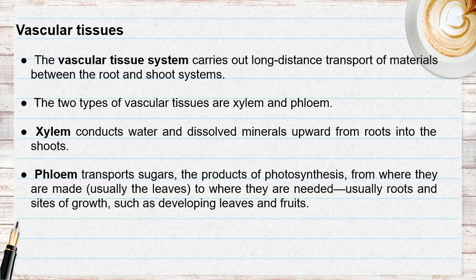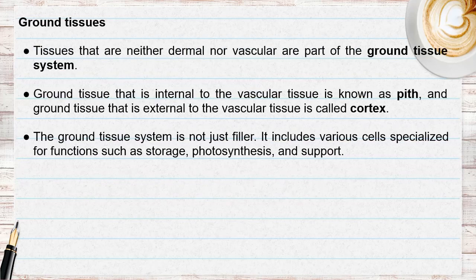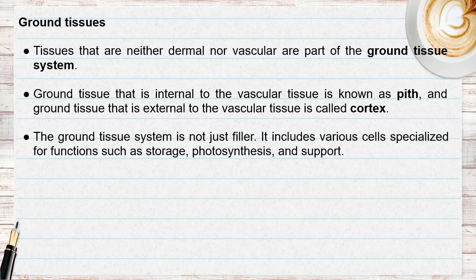The vascular tissue system carries out long-distance transport of materials between the root and the shoot. There are two types: xylem and phloem. Xylem conducts water and dissolved minerals from the roots up into the shoots, and phloem transports sugars from where they are made — usually the leaves — to where they are needed. The ground tissue internal to the vascular tissue is known as the pith, while the ground tissue external to the vascular tissue is known as the cortex. The ground tissue system has specialized functions for photosynthesis and support.